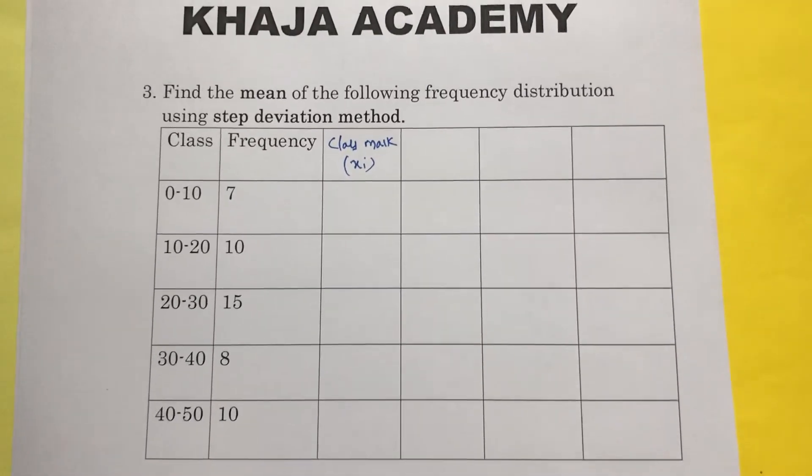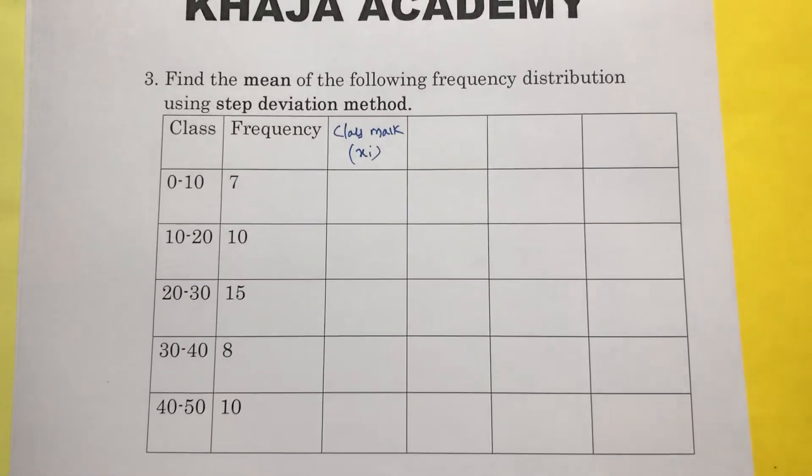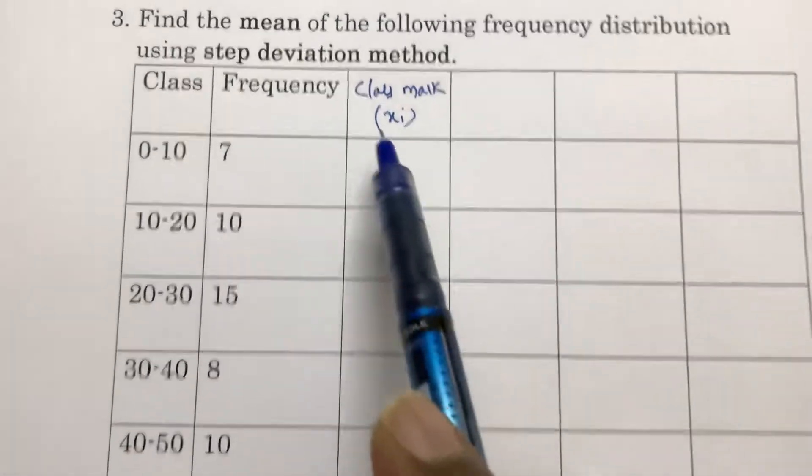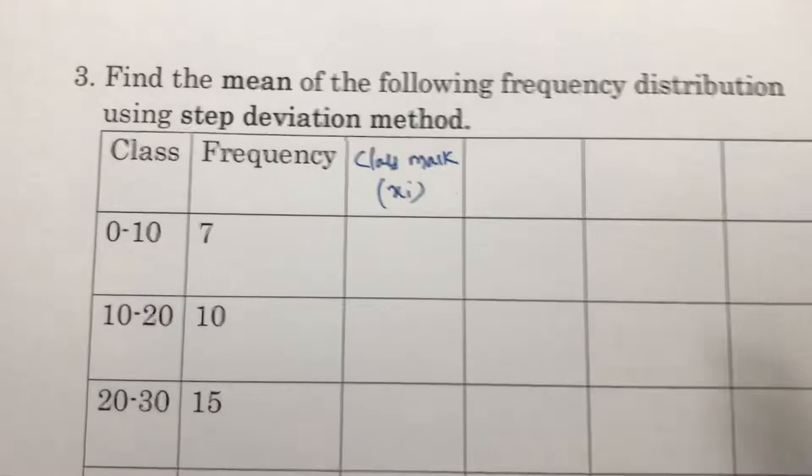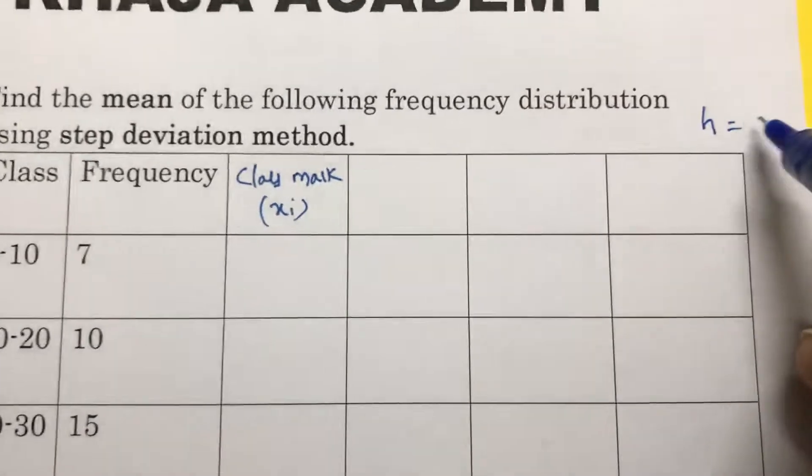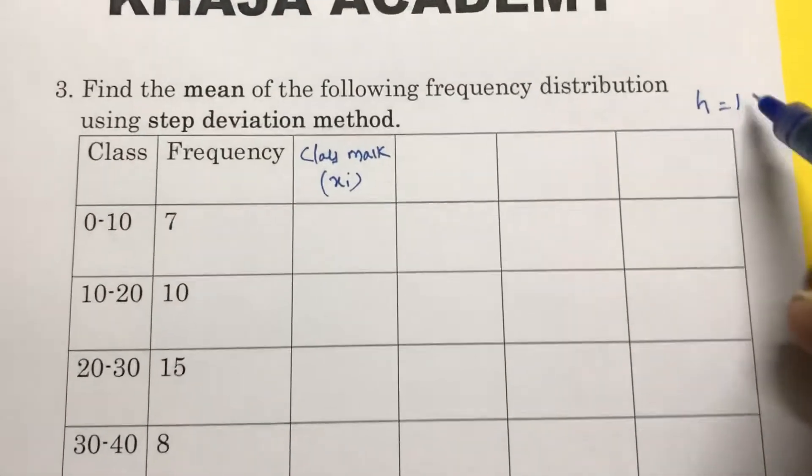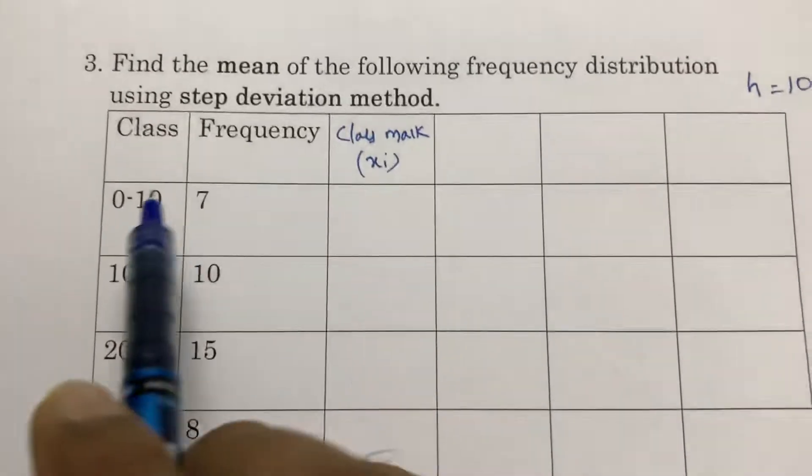Find mean by using step deviation. This method is also known as the shortcut method. For mean, compulsory we need to find the class marks. Before class marks, try to write H value. In this, H value is 20 minus 10, 30 minus 20. H is 10.